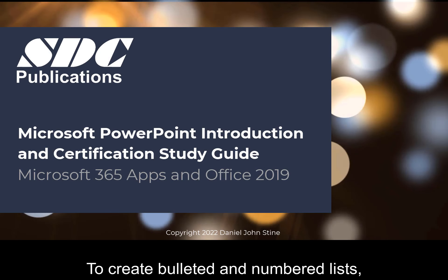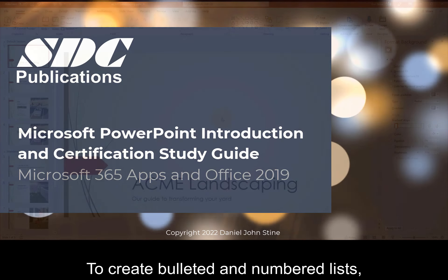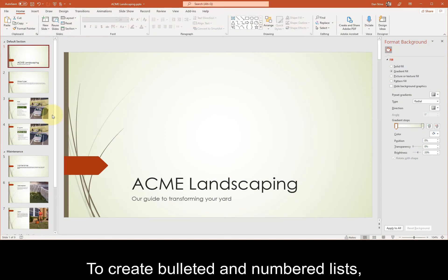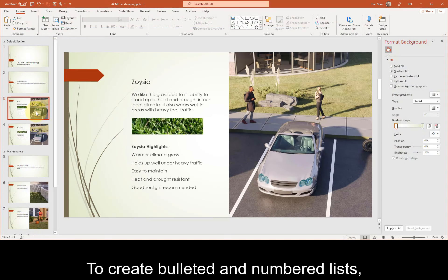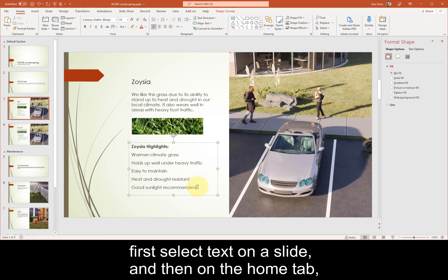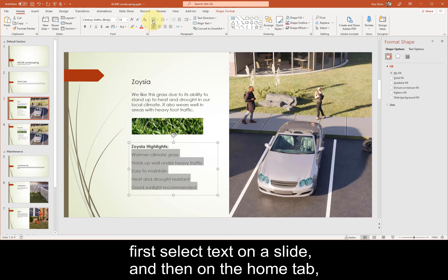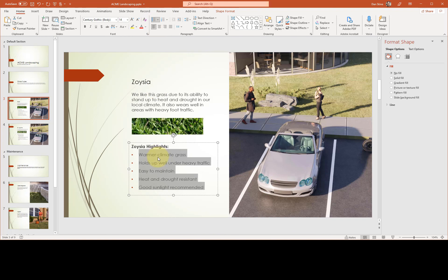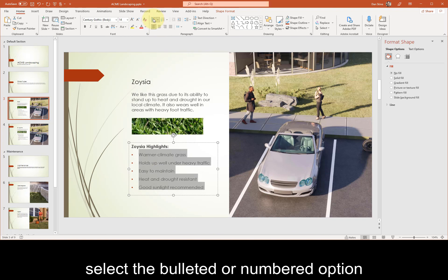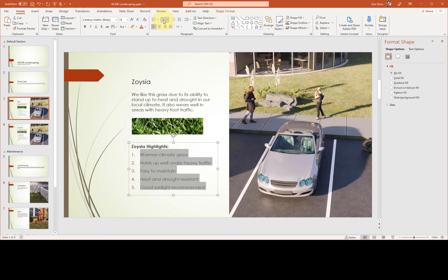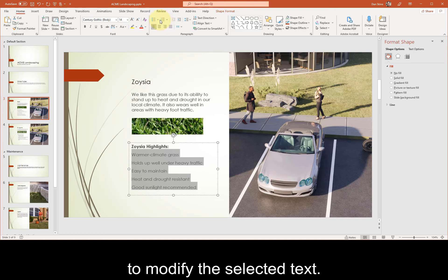To create bulleted and numbered lists, first select text on a slide, and then on the Home tab, select the bulleted or numbered option to modify the selected text.